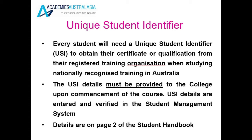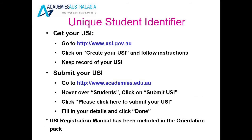The Unique Student Identifier. Every student will need a Unique Student Identifier, also known as a USI, to obtain their certificate or qualification from their registered training organisation. The USI details must be provided once you have set this up. For more details, you can refer to the Student Handbook. Basically, you can go to www.usi.gov.au, click on Create Your USI and follow the instructions. Once you have created your USI, keep a record of it. Then go to the Academies Australasia website, www.academies.edu.au.